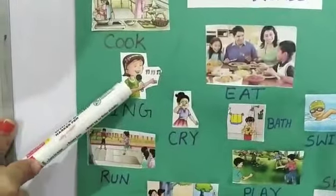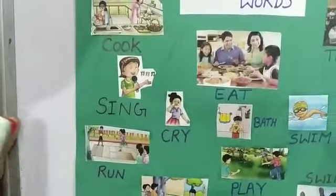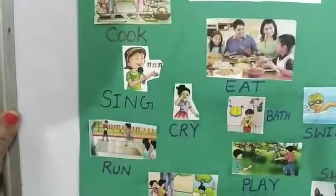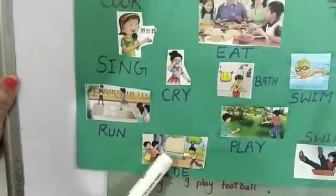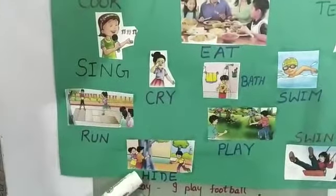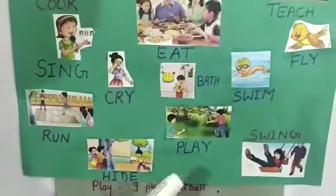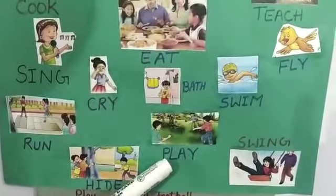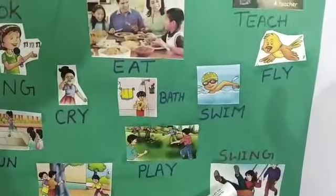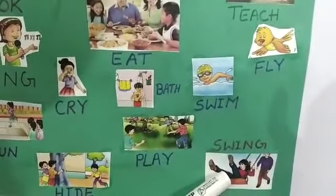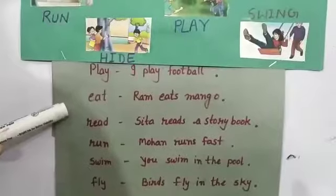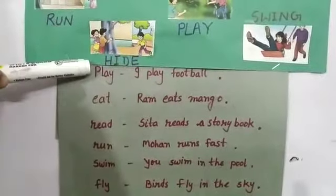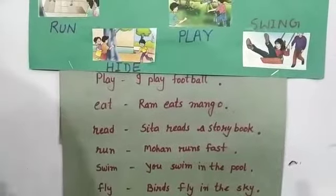She is singing. They are running. They are hiding. Boys are playing. And she is swinging. I am giving you some examples in a sentence.